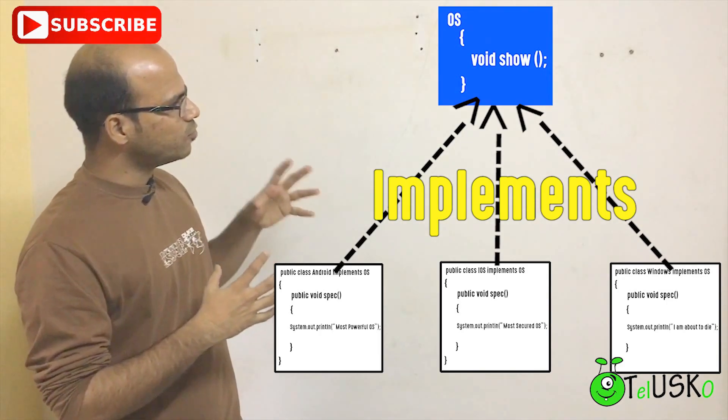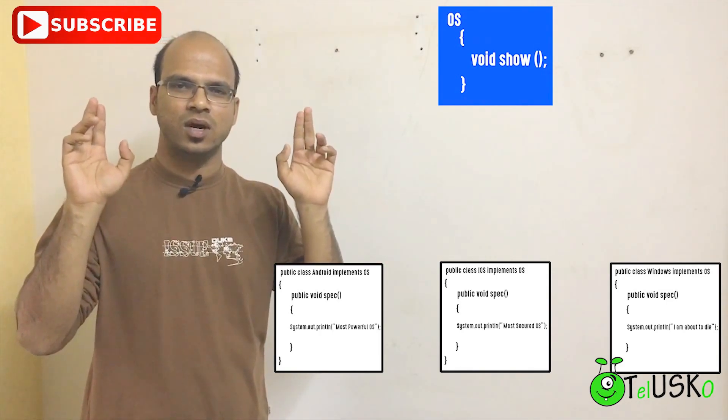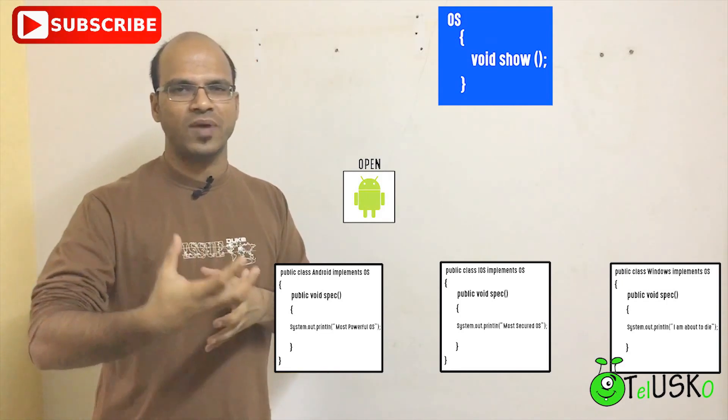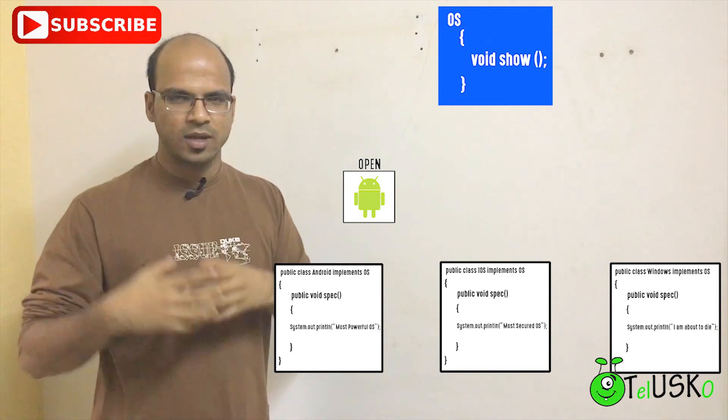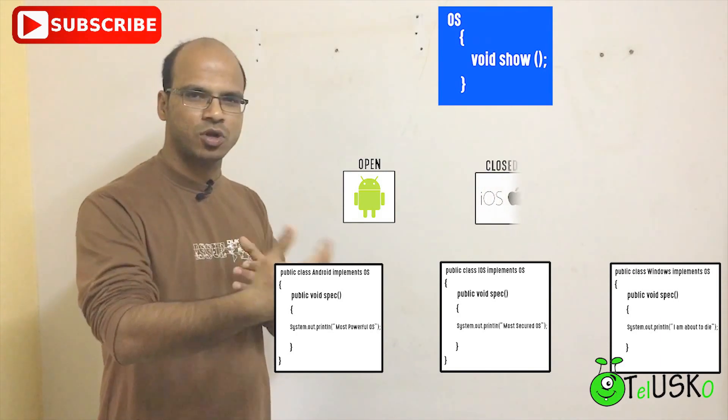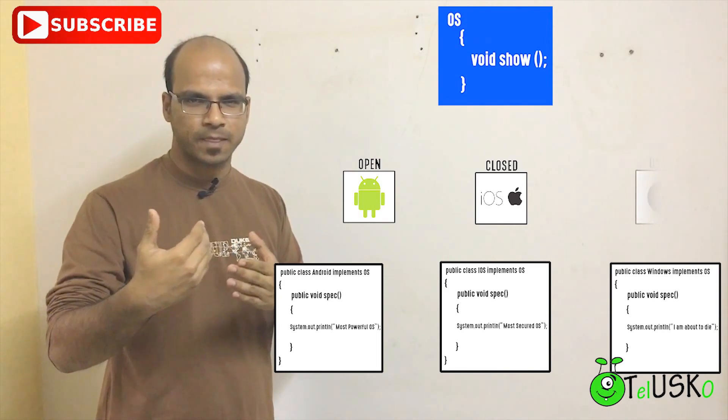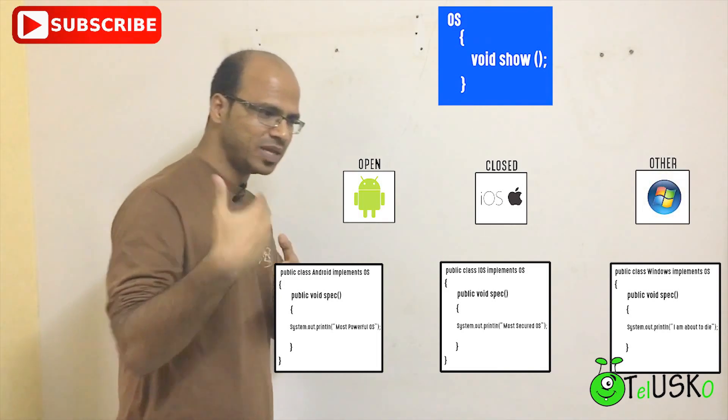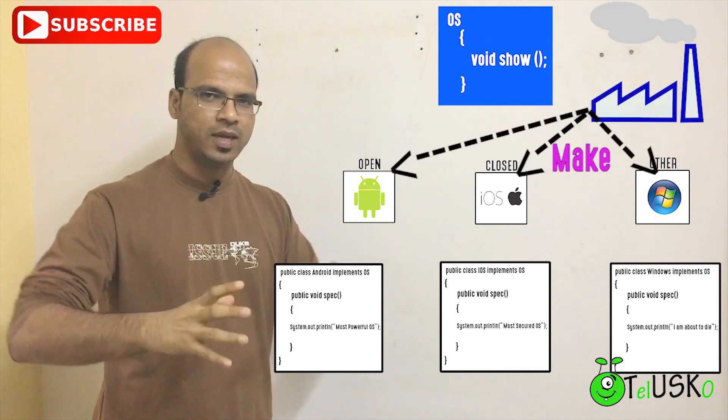Now if you want to create object of any of this, you just have to mention I want open source OS, so automatically it will give you the object of Android OS. If you want an OS which is closed source, automatically you will get object of iOS. Somebody else is providing you that object and that somebody else is your factory.